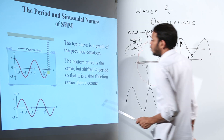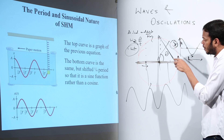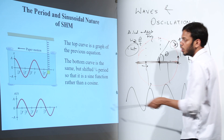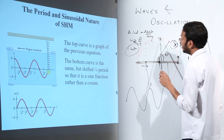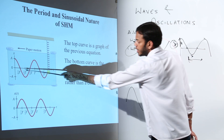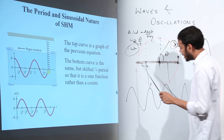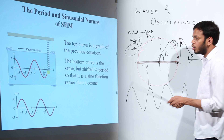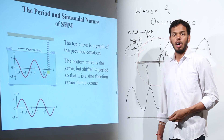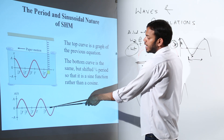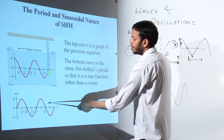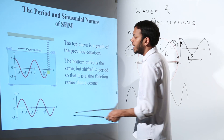At t = 0, maximum displacement. At t = T/4, the projection reaches the center, so displacement is 0. When t = T/2, again maximum displacement but on the opposite side, so minus. At 3T/4 it is going back to 0, and then maximum again. That is how we have drawn this graph.